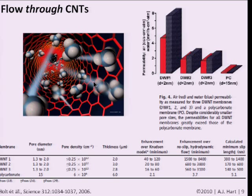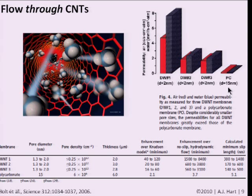This plot compares the permeability of the nanotube membranes for both air and water. In addition to hydrophobicity, the smoothness of the walls also creates very low friction for many fluids. The results show the relative permeability—essentially flow rate at a given pressure—for three membranes of double-walled nanotubes relative to a polycarbonate control membrane typically used for filtration. The nanotubes show much higher flow rates despite having far smaller pore sizes because of these effects, and also because the nanotube pores are continuous and straight, while polycarbonate membranes have tortuous pore networks.